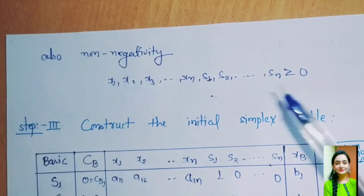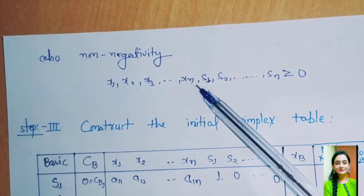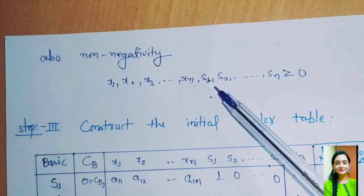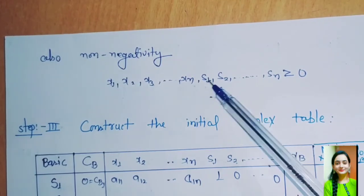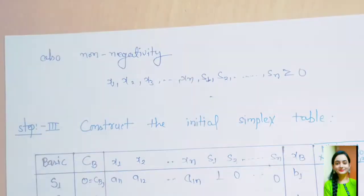Now, also non-negativity: all these variables x1, x2, x3, up to xn and the slack variables s1, s2, up to sn are greater than or equal to 0. Now Step 3.